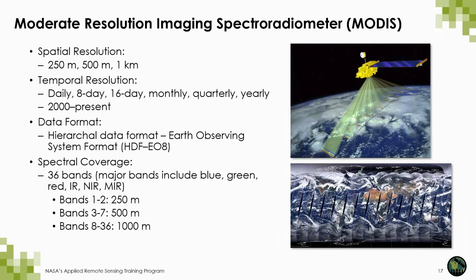MODIS is one of the key imaging instruments for NASA's Earth Observing System and is really used a lot in phenology. It's designed to measure large-scale global dynamics across lands, oceans, and the atmosphere. The MODIS sensor flies onboard two satellites that capture imagery of the same area on Earth at different times per day. The two almost-identical instruments are called Terra and Aqua, and this really allows us to provide global multi-spectral and multi-temporal data of Earth to build a comprehensive record of Earth's parameters.